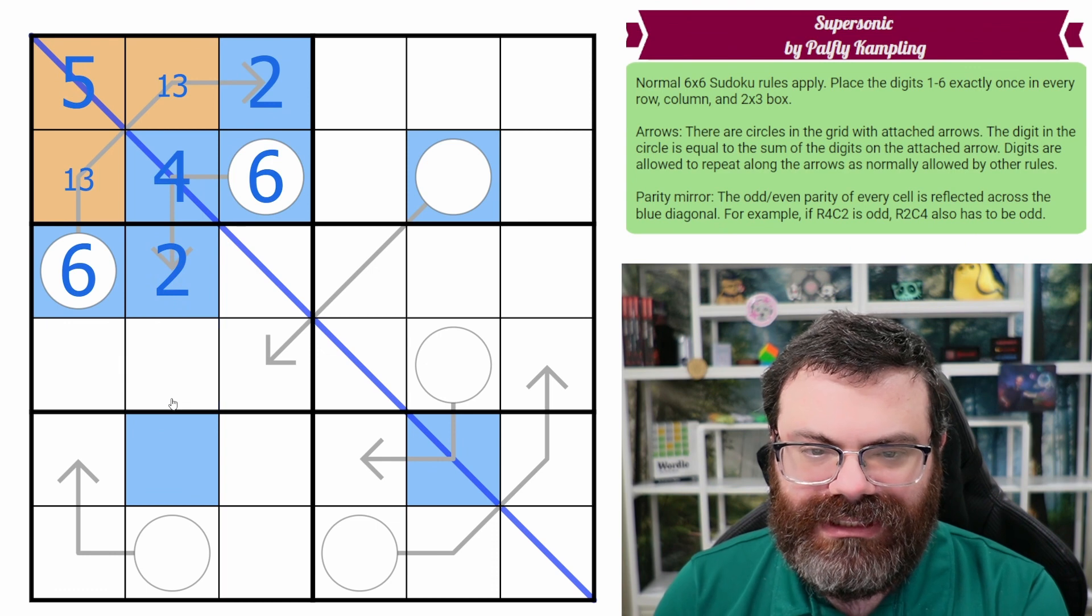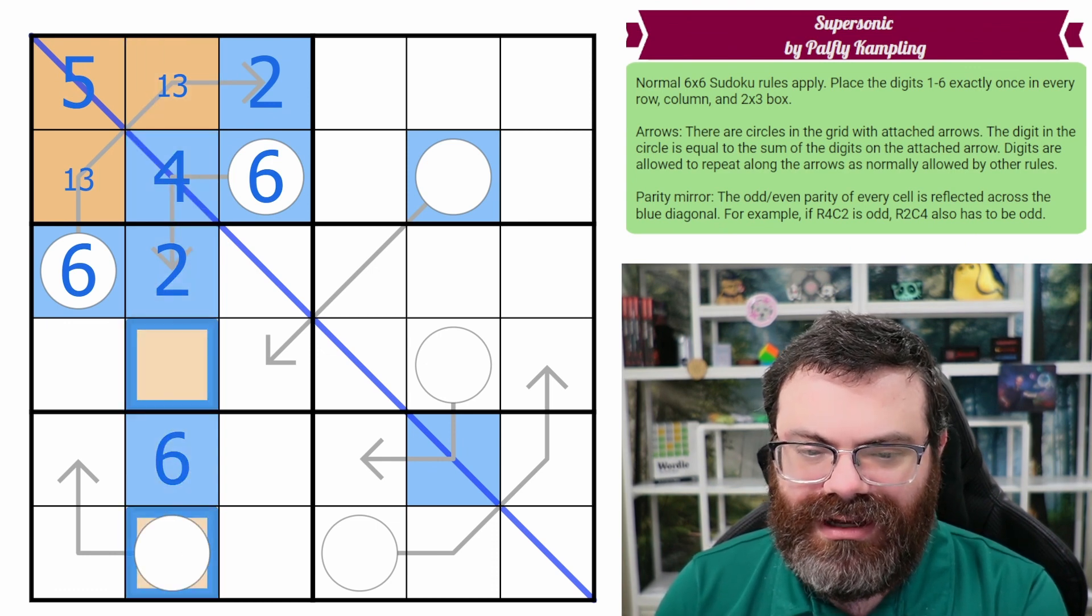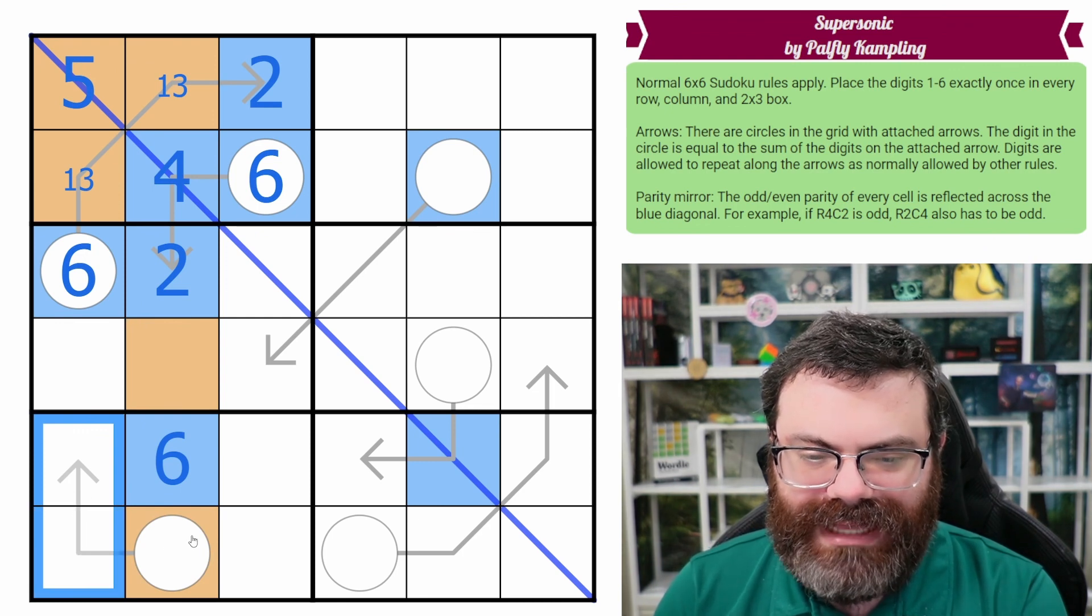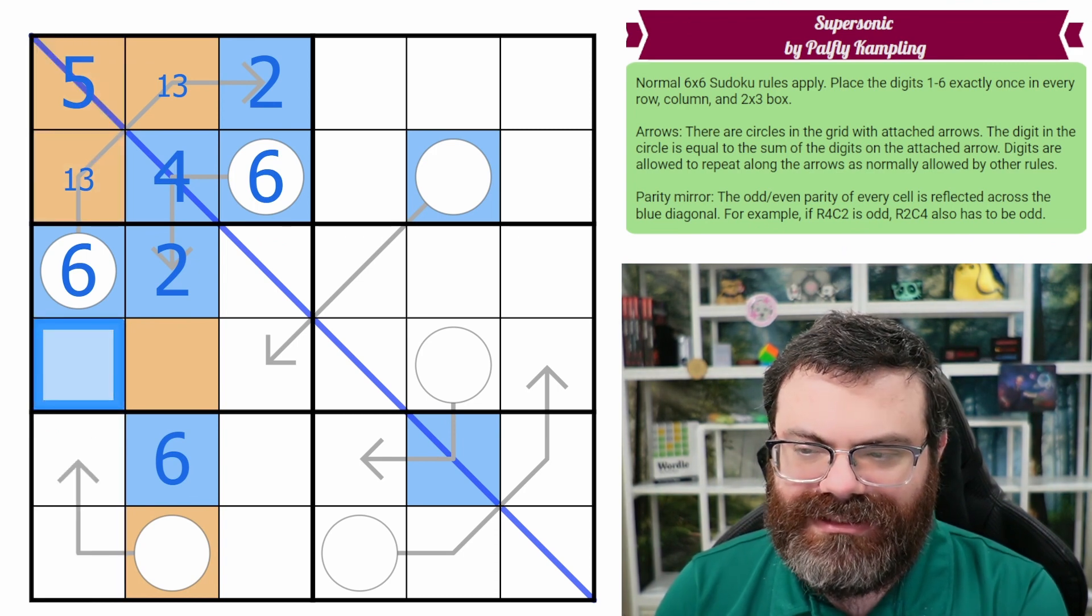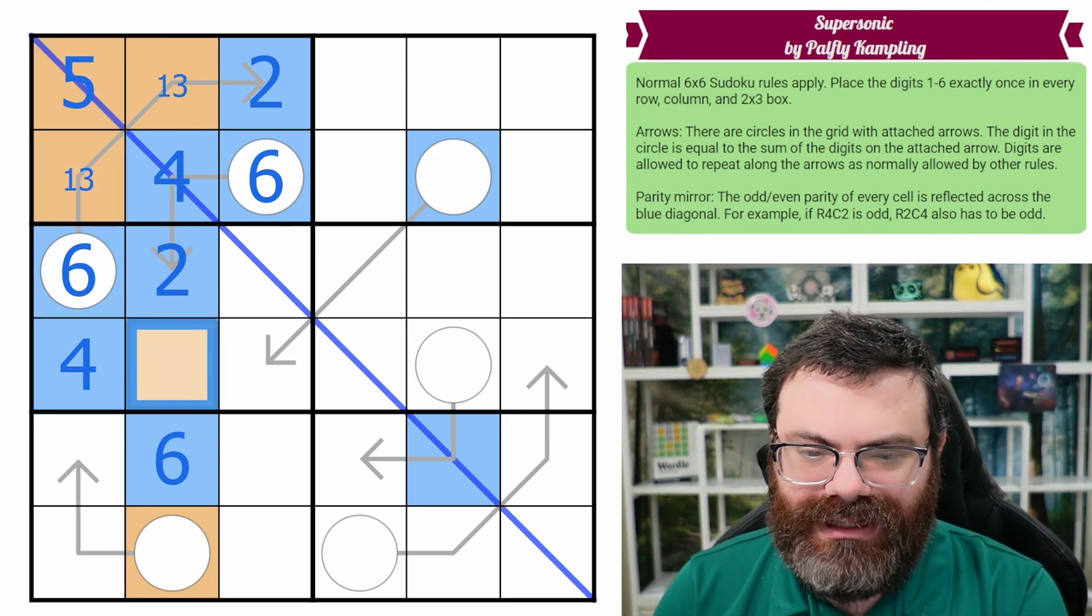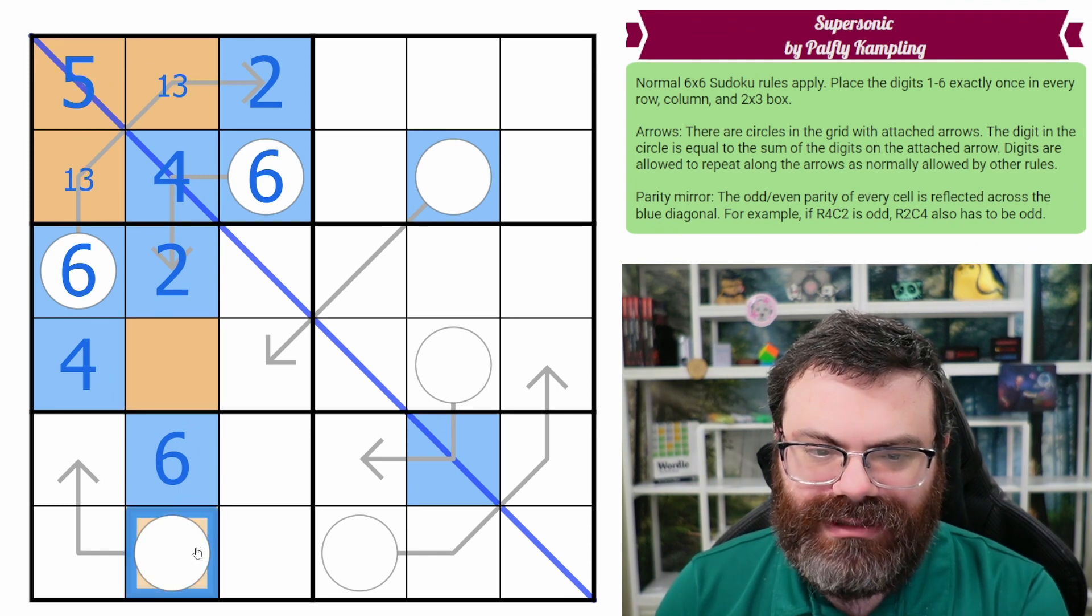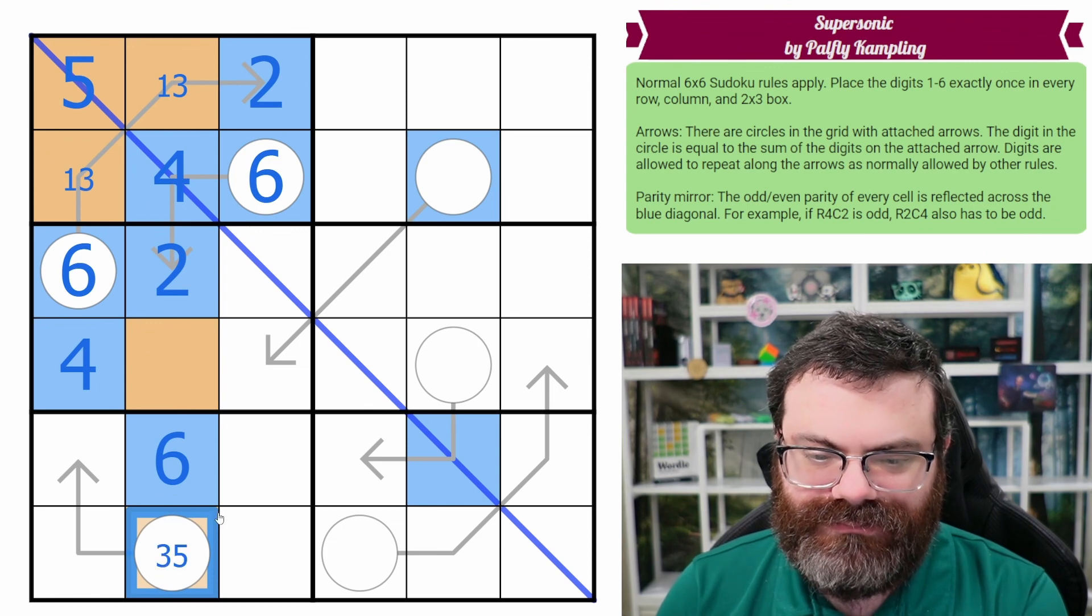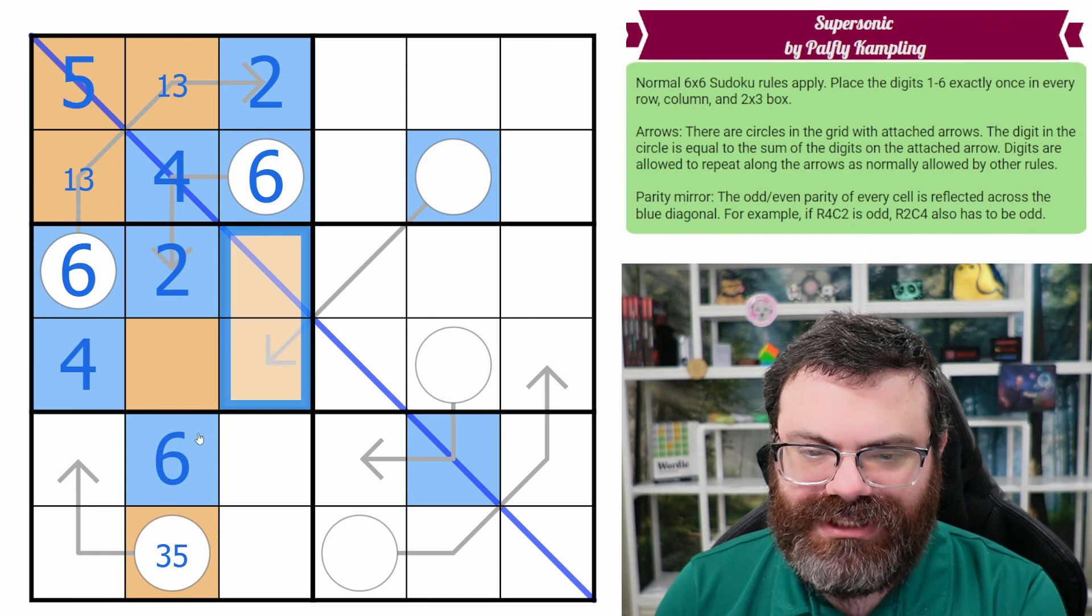This is even, and it's a two. We have all of our evens for this column. That's the six. So these two are odd. We need an odd here in order to add to an odd number because you can't make two evens add to an odd number. So that's all the odds for this column, which means this is even and it's a four. This is not a one. I think it could be a three. So this is three or five.